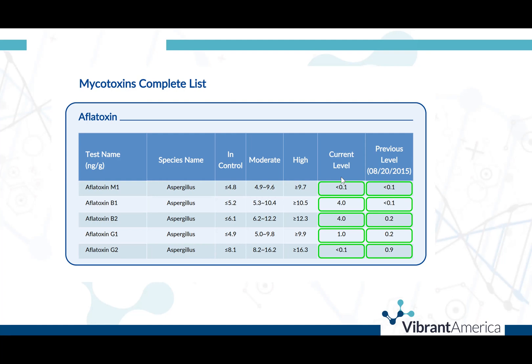Common crops which have been found to contain aflatoxin include cassava, chili peppers, corn, cotton seed, millet, peanuts, rice, sesame seeds, sorghum, sunflower seed, tree nuts, wheat, and a variety of spices. When contaminated food is processed, aflatoxin enters the general food supply, where it is found in both pet and human food, as well as feedstock for agricultural animals.